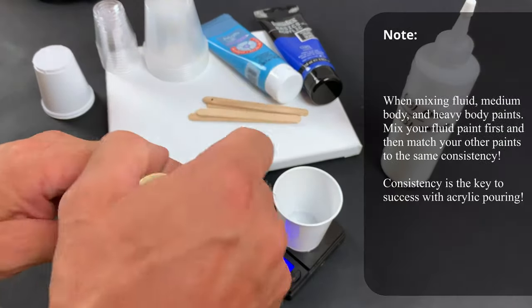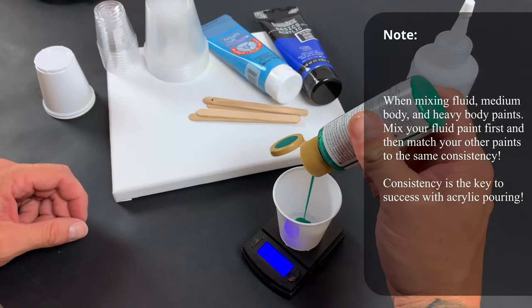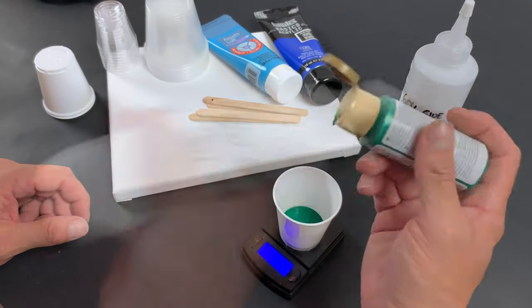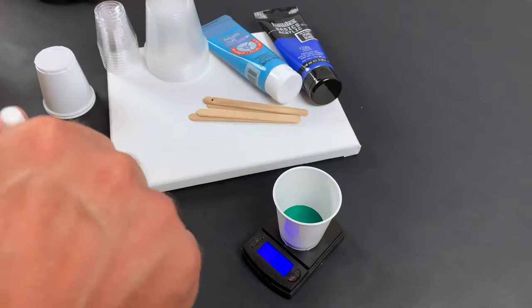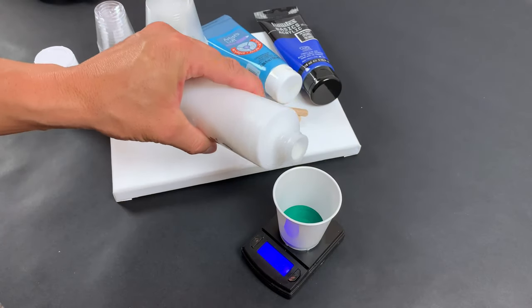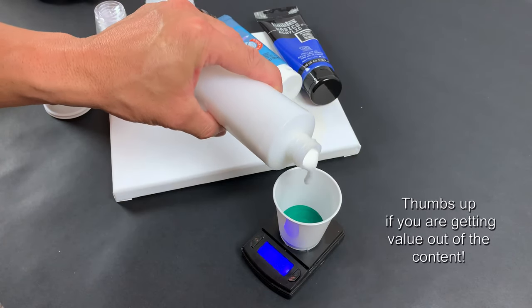When mixing fluid acrylics I use a 1 to 1 ratio of medium to paint. The important thing to note is that your paint consistency is important. I always mix my fluid acrylics first and that I match the medium and the heavy body consistencies to the fluid one.